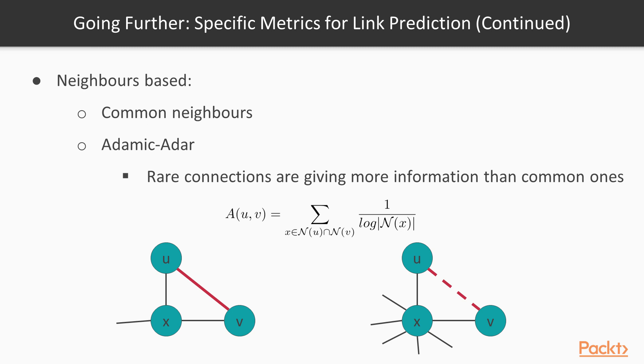Another method is to use the intuitive notion that rare features are more telling. In the case where two nodes, U and V, are connected to a single neighbor X, if X is only connecting U and V, they have a strong relationship. On the contrary, if X is connected to many other nodes, U and V are more loosely coupled.